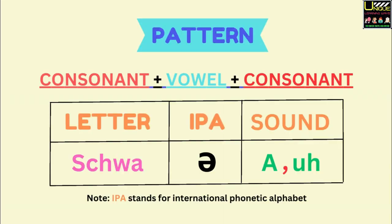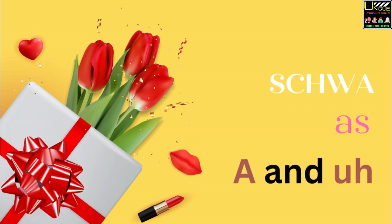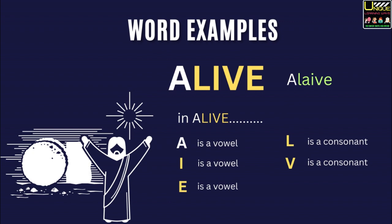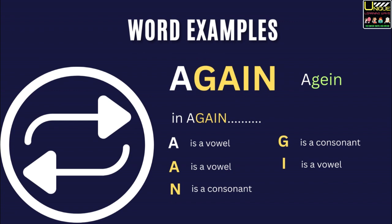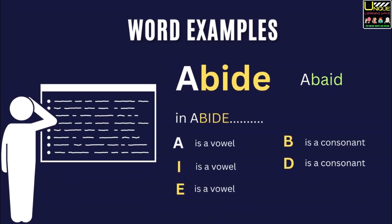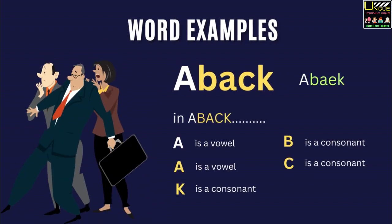Pattern: Consonant, Vowel, Consonant. Letter Schwa, sound /ə/. Word examples. Alive. In alive, A is a vowel, L is a consonant, I is a vowel, V is a consonant, and E is also a vowel. Again. In again, A is a vowel, G is a consonant, A is a vowel, I is a vowel, and N is a consonant. Abide. In abide, A is a vowel, B is a consonant, I is a vowel, D is a consonant, E is a vowel. Aback. In aback, A is a vowel, B is a consonant, A is a vowel, C is a consonant, and K is a consonant.